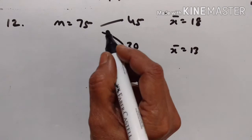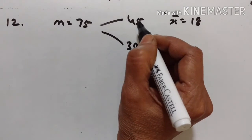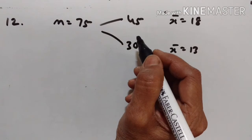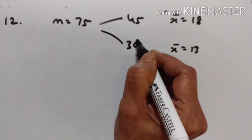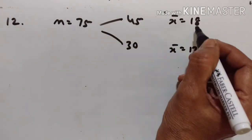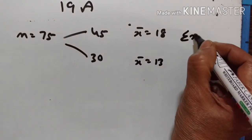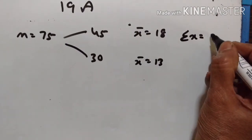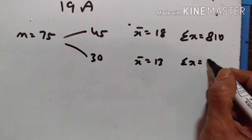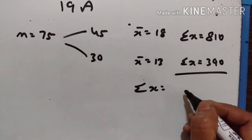12th problem: find the mean of 75 numbers — n equals 75. The mean of 45 of them is 18, and the mean of the remaining 30 is 13. The sum of the 45 observations is 18 times 45, that is 810. The sum of the 30 observations is 13 times 30, that is 390. Total sum is 390 plus 810.